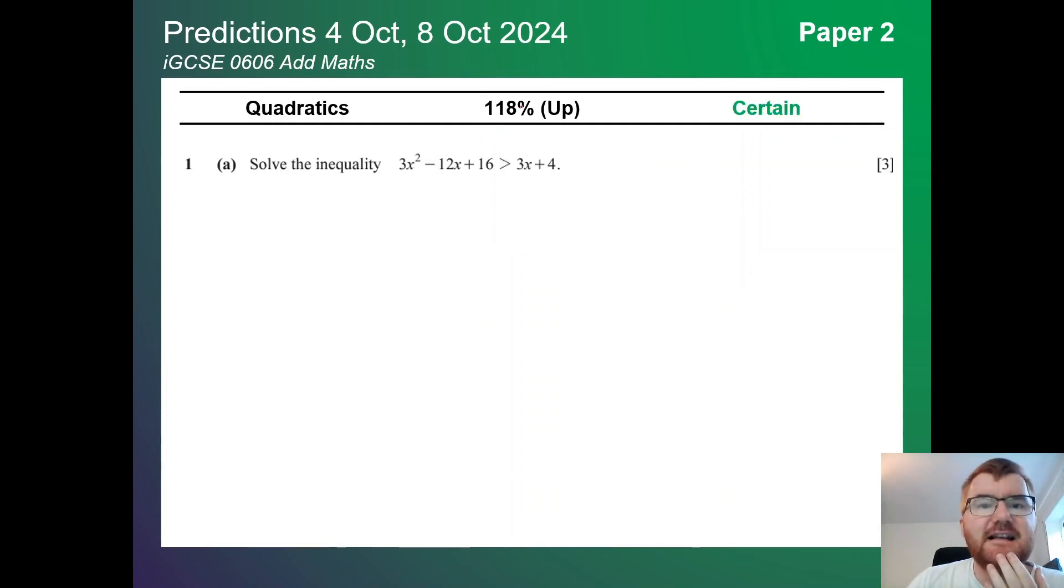On to quadratics. At 118%, so bigger slightly on paper 2. Notice here it could involve things like inequalities for example. Even though this is not a direct solve a quadratic, you need those quadratic skills to answer this kind of question. Towards the start of the paper because it's not too far away from what you've already done in the IGCSE standard maths courses.